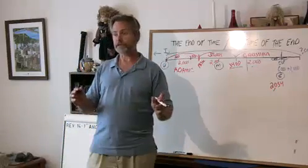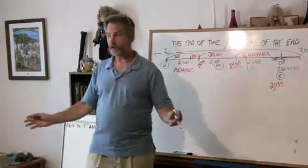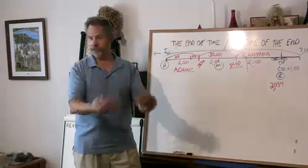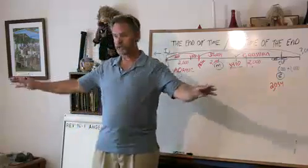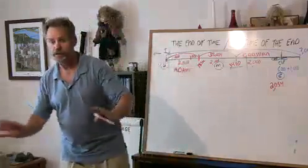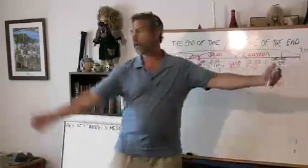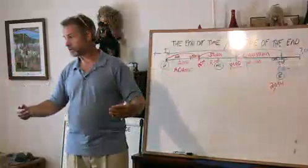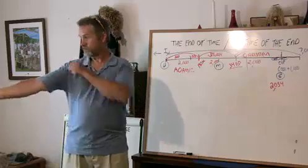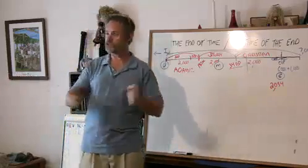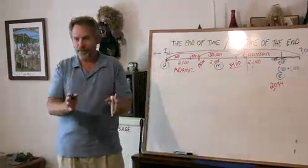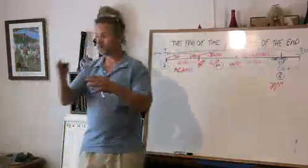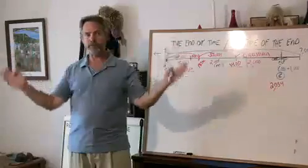On a smaller scale, Sodom and Gomorrah is a closing of probation for that city. In Scripture we see closes of probation for a world, a city, individuals, a temple — the sanctuary. The first example is 120 years for Noah. But could God be giving us a clue? When he gives the 120 years — very literal for Noah and his family — could God be giving us a clue concerning the whole cycle?